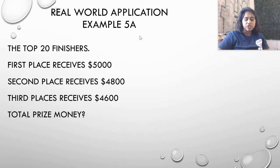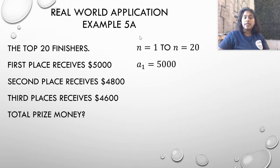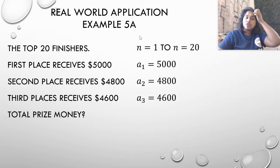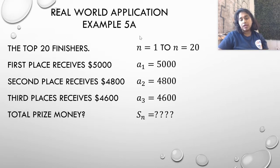The top 20 finishers means that they've given me the number of terms I want to know about. So from n = 1 to n = 20. If they tell me that first place receives $5,000, they've actually told me my first term. So a₁ = $5,000. Second place means a₂ = $4,800, a₃ = $4,600. To find the total prize money, I'm looking for a sum value. So my sum, specifically, it's S₂₀ is what we're looking for.